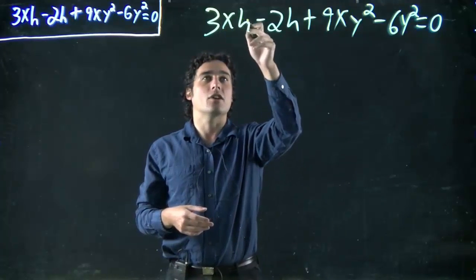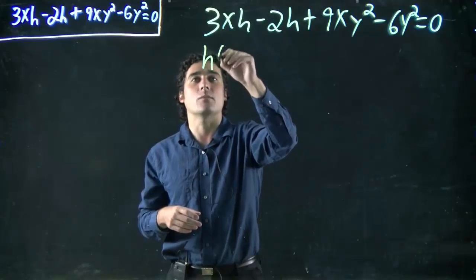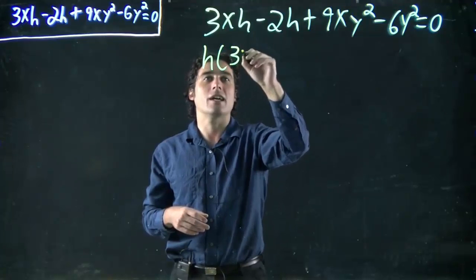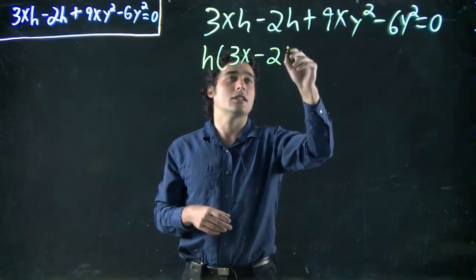So in this case, what do they have in common? An h. So I factor out an h, I bring the h in front of the bracket, and then divide everything left by h. 3x divided by h, 3x. Dividing 2h by h just leaves a 2 behind.